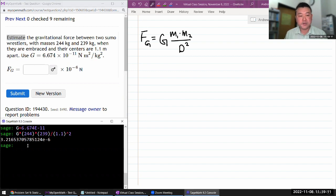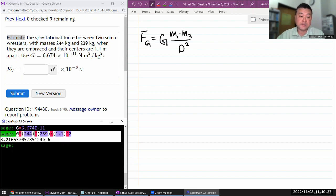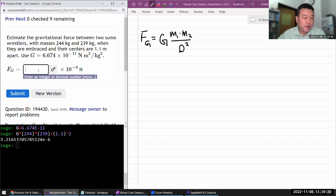This is not exact calculation unless the sumo wrestlers happen to be spherical. Because the distance between their centers, it'll be exact if they happen to be spherical. But for any other shape of objects or people, this will be only an approximate estimate. Which is fine. We are just looking for order of magnitude estimate.